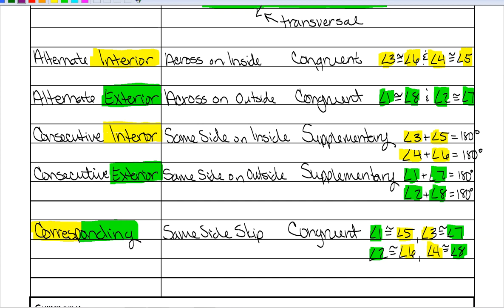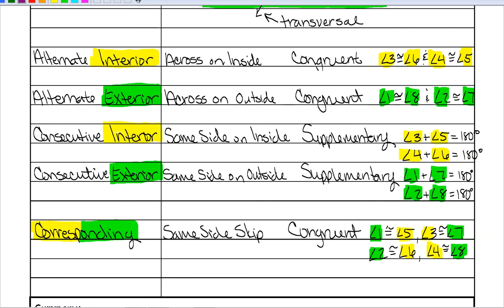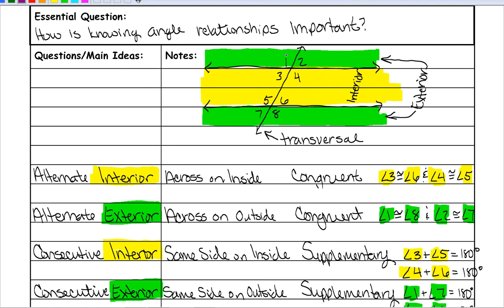All of these angles are either congruent to each other or supplementary, which means there are only two angle measures throughout. Angles 1, 4, 5, and 8 are all obtuse and have the exact same measure. Angles 1 and 4 are vertical angles so they are congruent; 4 and 5 are alternate interior angles so they are congruent; and 5 and 8 are vertical angles so they are congruent.